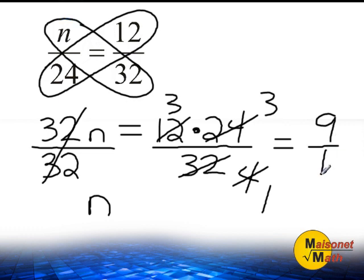And of course, 9 over 1 is an improper fraction, and that can be simplified to 9 wholes. So we would say in this proportion that n has a value equal to 9.